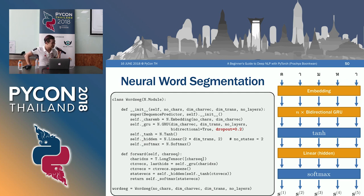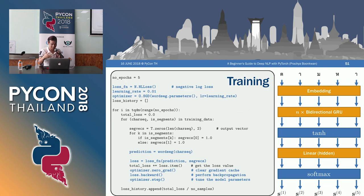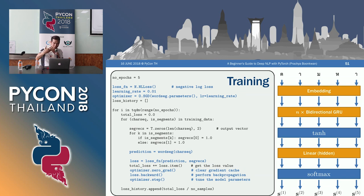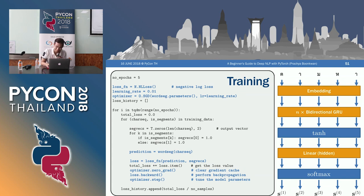For training word segmentation, you need a sequence of characters and a sequence of the same length identifying each position as a boundary or not. You feed them into the training model, compute the prediction, compute the loss, and optimize the parameters — the same standard practice as before. This is the actual code of NEC Tech's word segmentation training module.